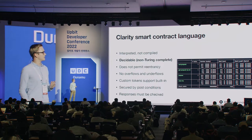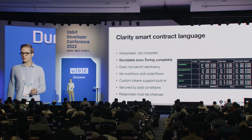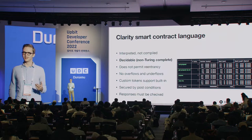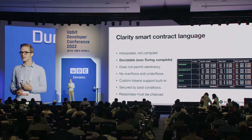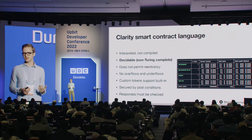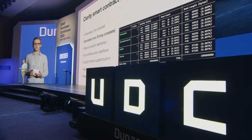A second property is that Clarity is a decidable language. It's non-Turing complete on purpose, which means gas estimations and gas limits don't come into play because you can statically analyze the entire contract call before you send a transaction. You can know in advance what the maximum runtime cost will be, so you never run into an unbounded loop or run out of gas.